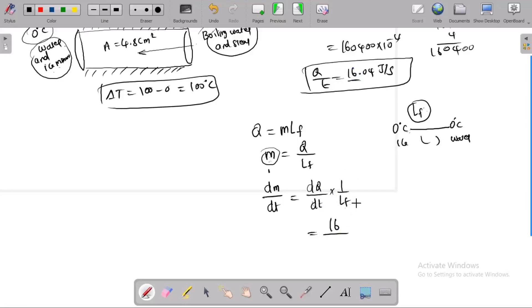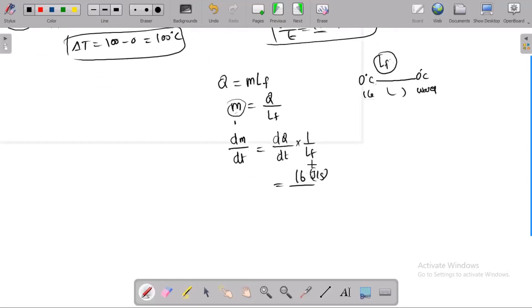Lf, latent heat of fusion, joules by second. The answer is 333 joules per gram, joules per gram. This is sorted, 0.048 grams per second. There is melting. The melting rate is 0.048 grams per second. One second is 0.048 grams per second.